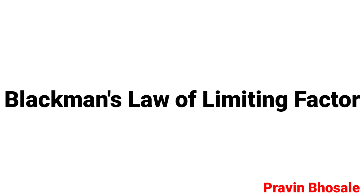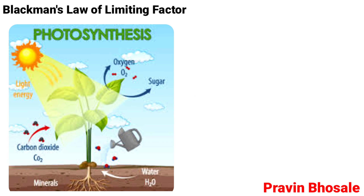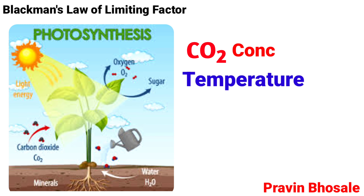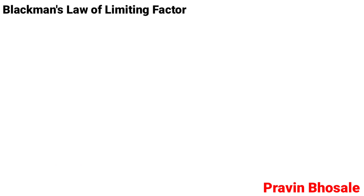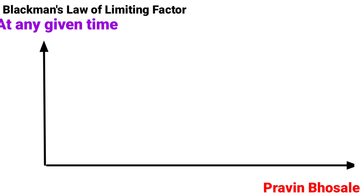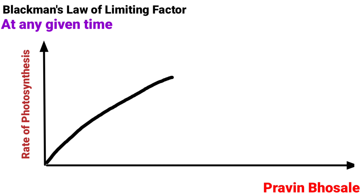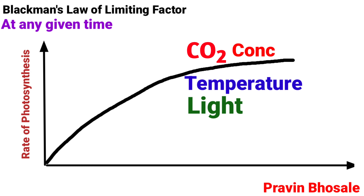Blackman's Law of Limiting Factor states that the rate of photosynthesis is affected by more than one factor, i.e., carbon dioxide concentration, temperature, and light. As per the law of limiting factor, at any given time, the rate of photosynthesis depends on the factor which is the lowest.